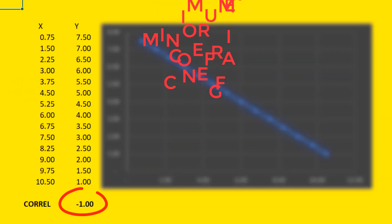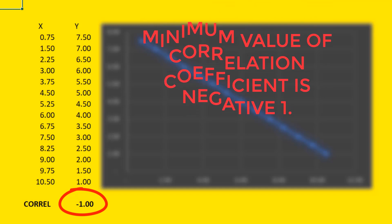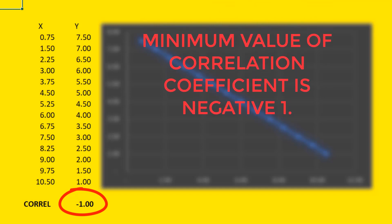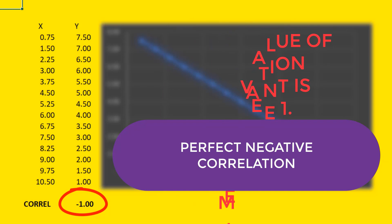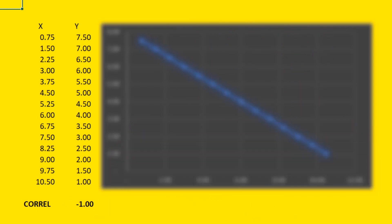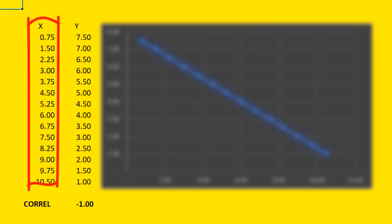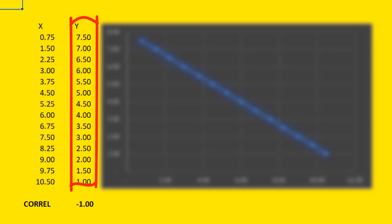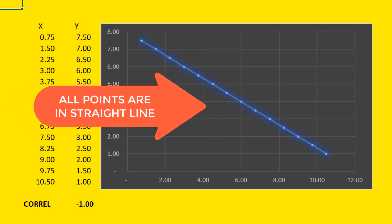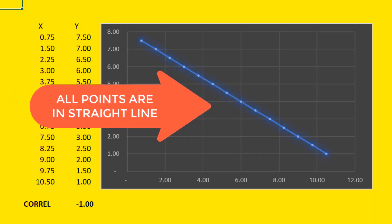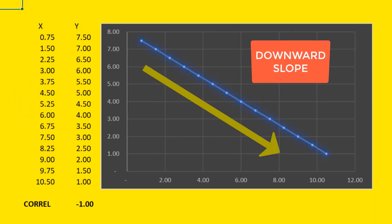The minimum value of the correlation coefficient is negative 1, which indicates a perfect negative correlation. This data shows that for every quarter unit increase of x, y decreases by half a unit. When we make a scatterplot, all points are in a straight line, but this time in a downward slope.